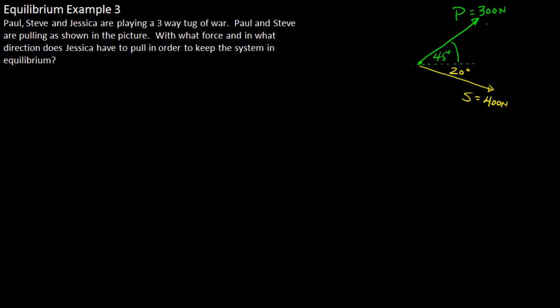So we have Paul pulling here with a force of 300 newtons at an angle of 45 degrees. Steve is pulling with a force of 400 newtons at an angle of 20 degrees. And Jessica is also going to join in and try to keep the whole system in equilibrium.